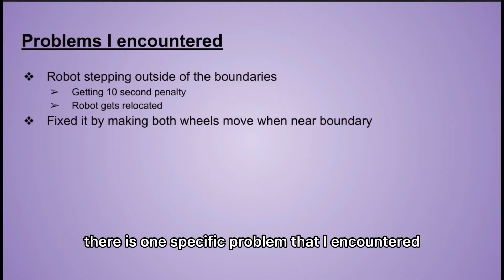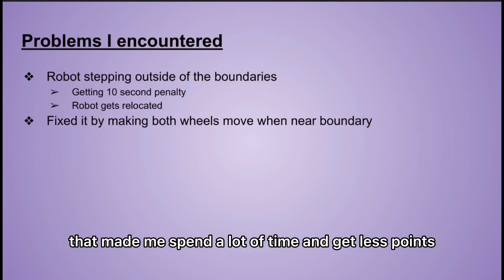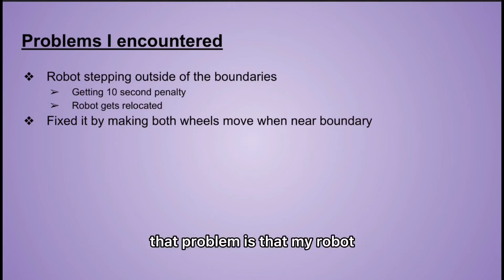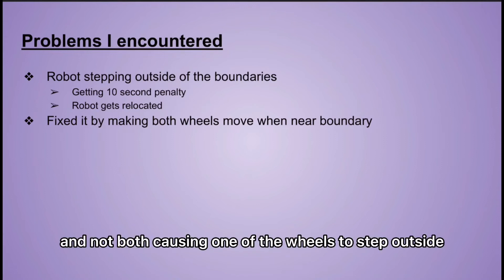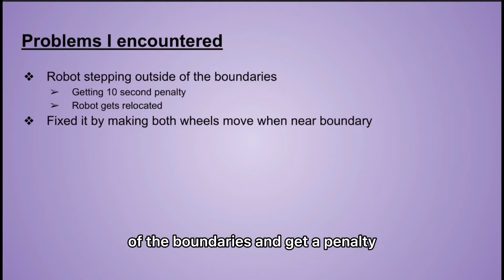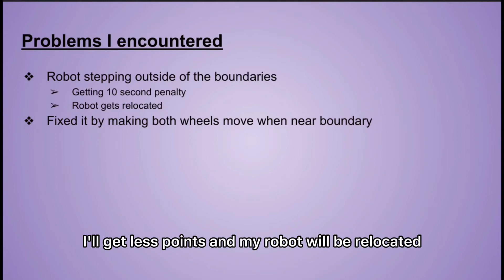There is one specific problem that I encountered that made me spend a lot of time and get less points. That problem is that my robot kept falling off the map and getting a penalty. What caused this is that I coded the robot to turn using only one wheel and not both, causing one of the wheels to step outside of the boundaries and get a penalty.